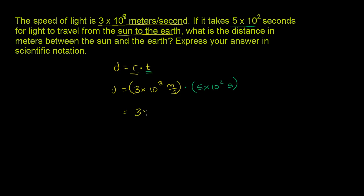This is equal to 3 times 5, I'm just re-commuting and re-associating these numbers. 3 times 5 times 10 to the eighth times 10 to the second. And then we're going to have meters per second times seconds. And if you treated these like variables, this seconds would cancel out with that seconds right there. And you'd just be left with the unit meters, which is good, because we want a distance in meters.